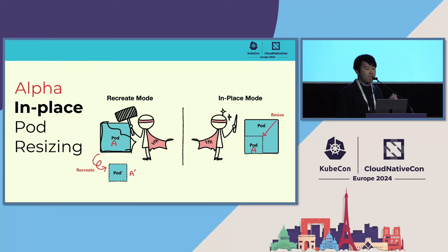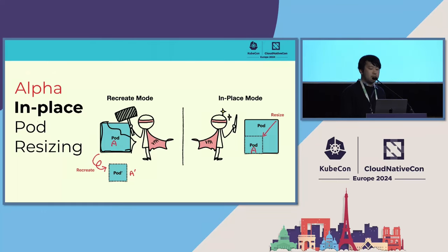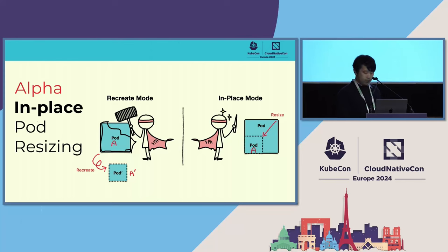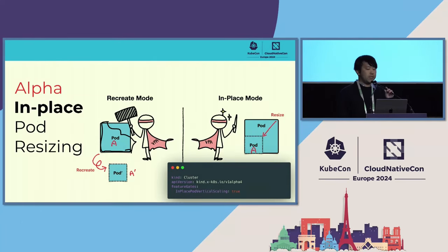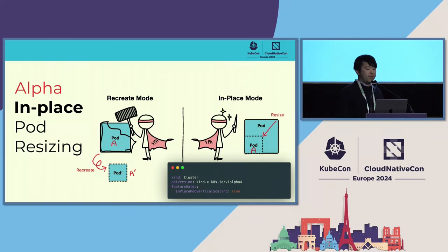Here is what we want to introduce to you: a new alpha feature called in-place resource resizing for Kubernetes pods, available since Kubernetes 1.27. This feature gate adds the field called resize policy to pod specs. The default mode is Recreate — basically how the current pod behaves when the resource field in the pod spec has changed. The new in-place mode enables a pod to modify resource limit fields without recreation or restart. To enable this feature, you just need to enable the feature gate called InPlacePodVerticalScaling.